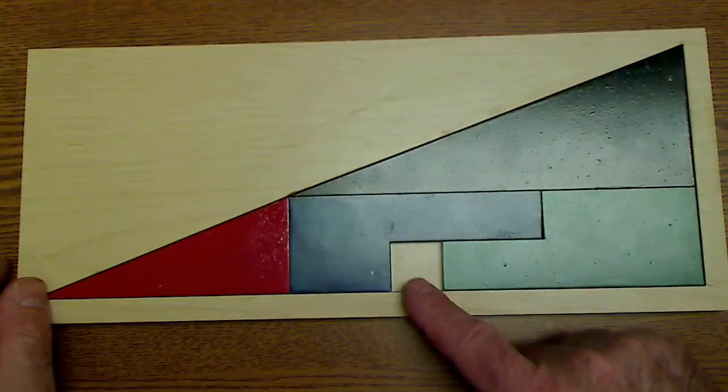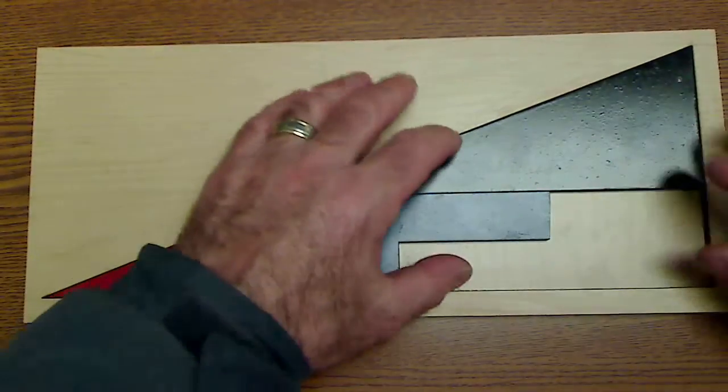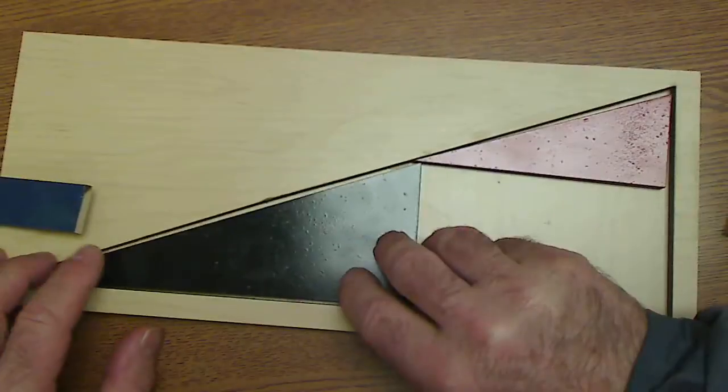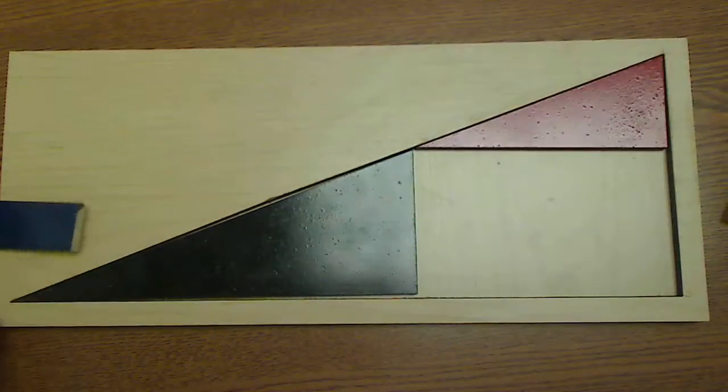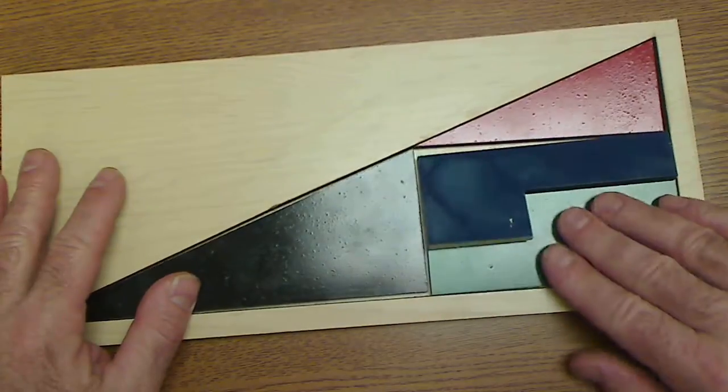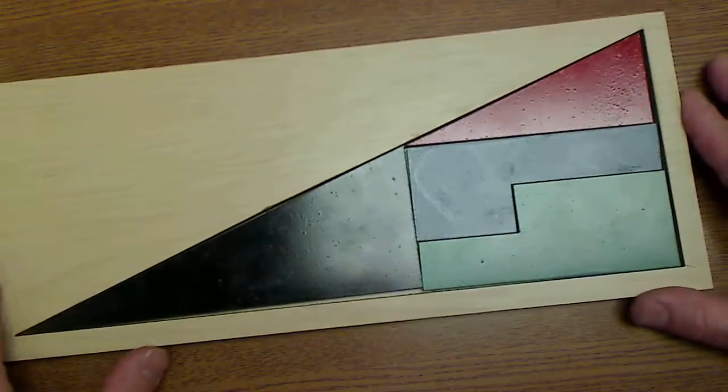So how is it that all of a sudden you have a space here and then you rearrange the pieces, and when the pieces are rearranged, the missing square is gone now? How is that possible?